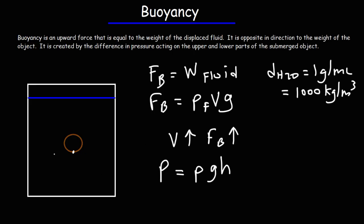So let's say this is point A and point B. The pressure at point A is higher than the pressure at point B because A is deeper in water than B. So we have a higher pressure exerted on the lower part of the object and a lower pressure on the upper part of the object. Whenever you have a difference in pressure, there's going to be a net force. And the net force created by those differences in pressure is the upward buoyant force.